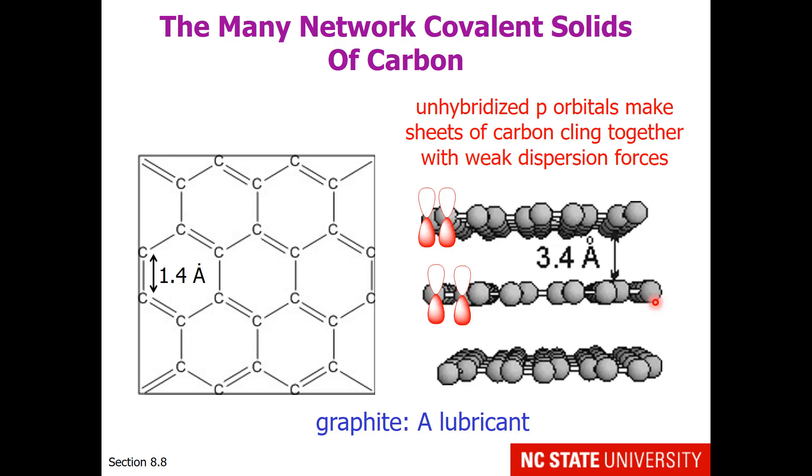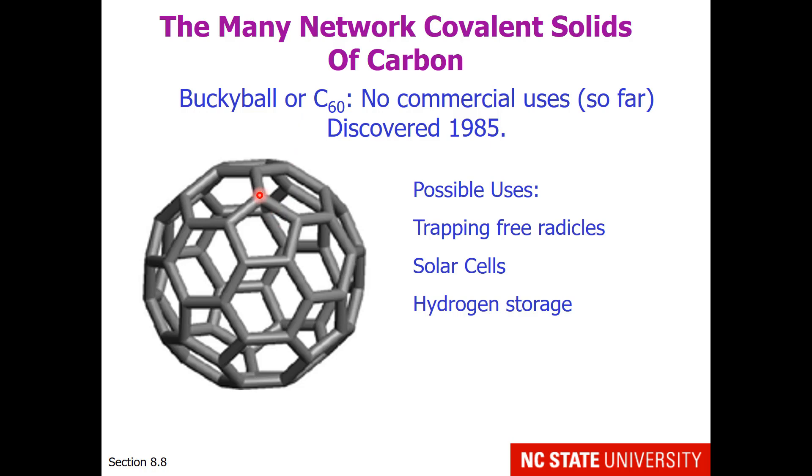Graphite is used in pencil leads for test taking and also as a lubricant for some high temperature machinery. 60 carbons together form this unique structure known as buckyball. It sort of looks like a soccer ball, with 5-membered rings and 6-membered rings. This was discovered in 1985. This molecule is difficult to manufacture in large quantities, so there are no commercial uses thus far, but scientists have envisioned many uses for buckyball, including trapping free radicals within the body to prevent aging, coatings for solar cells, or even hydrogen storing for hydrogen-powered cars.